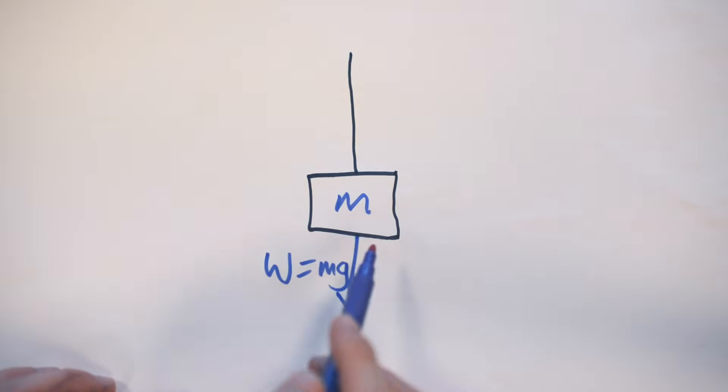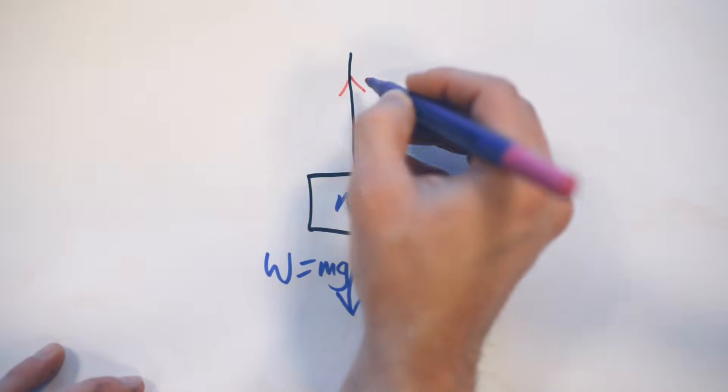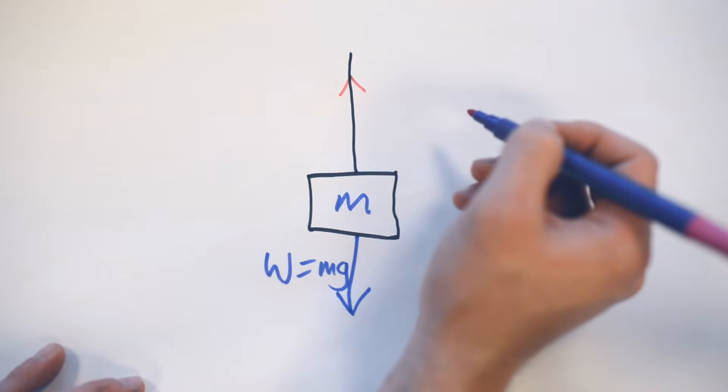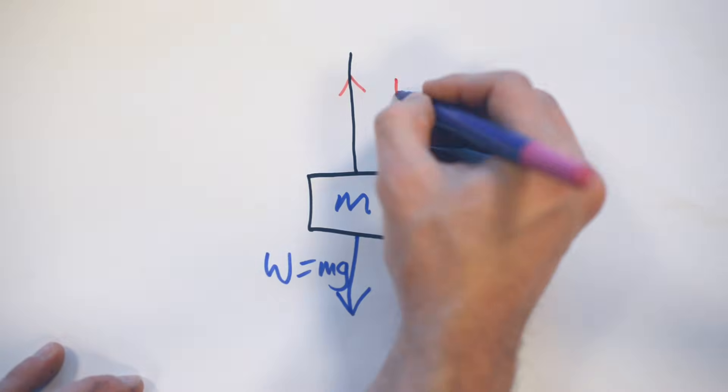Now, of course, in order for this mass to just be hanging nicely, not accelerating upwards or downwards, then the string must be pulling back upwards with a force that equals the weight. And that's what we call our tension.